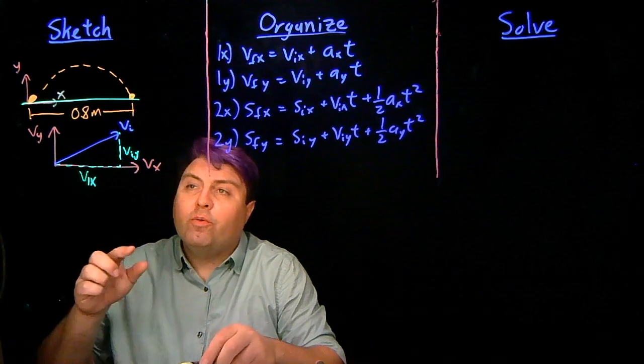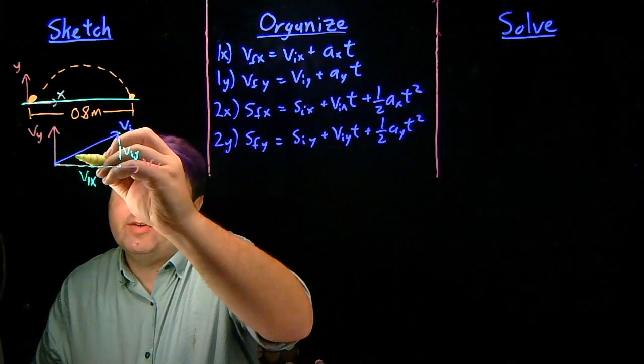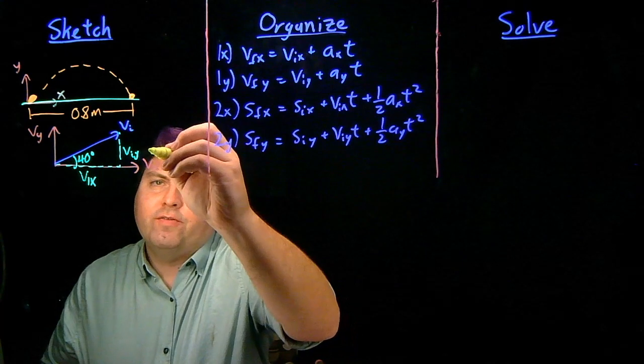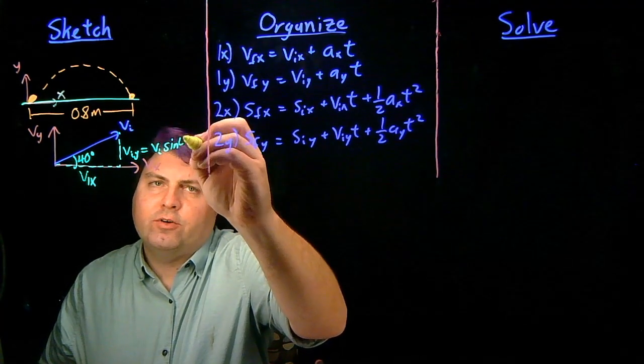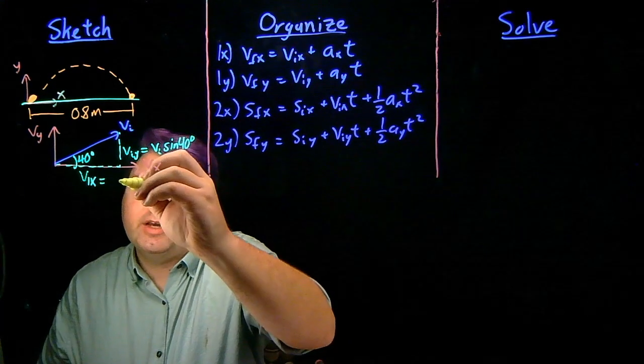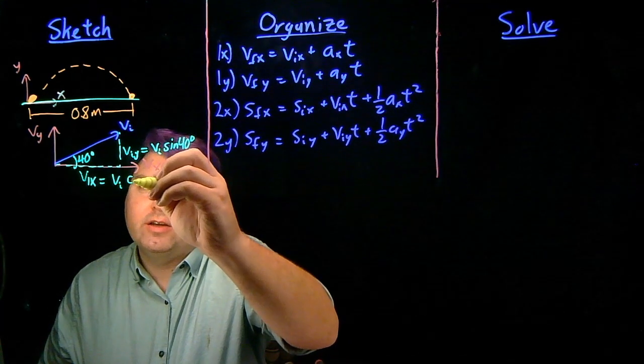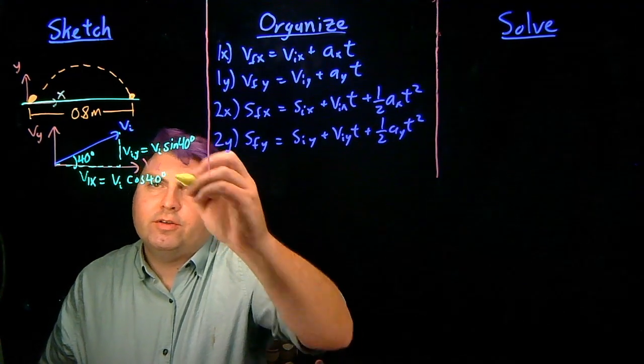So with this, we can take a look and we can see this 40 degree angle here. So our viy is going to be equal to vi sine of 40 degrees, and our vix is going to be equal to vi cosine of 40 degrees.